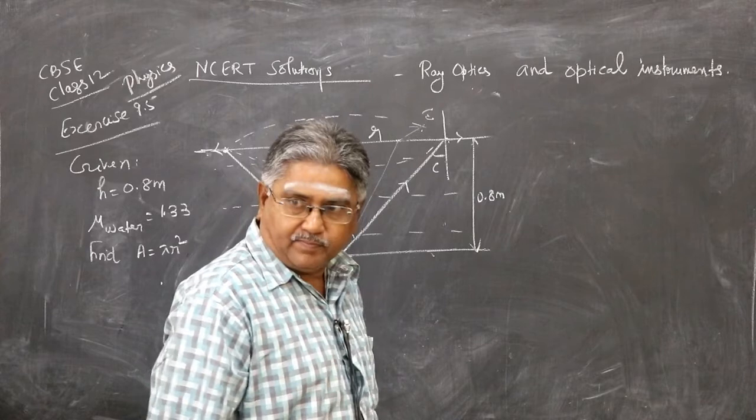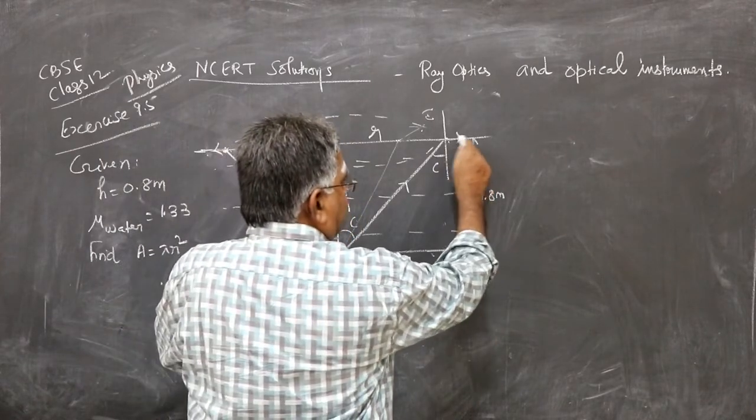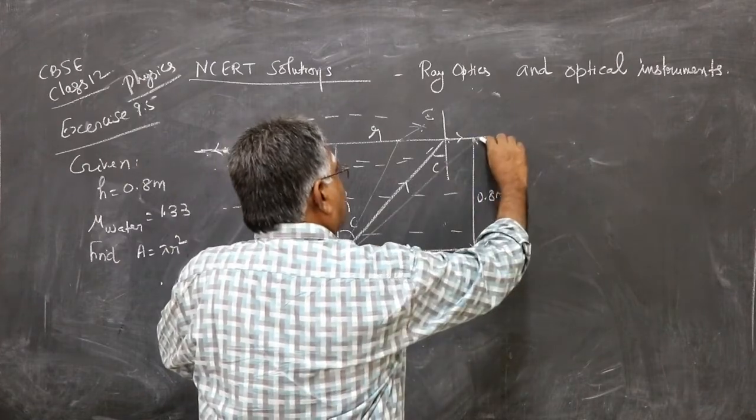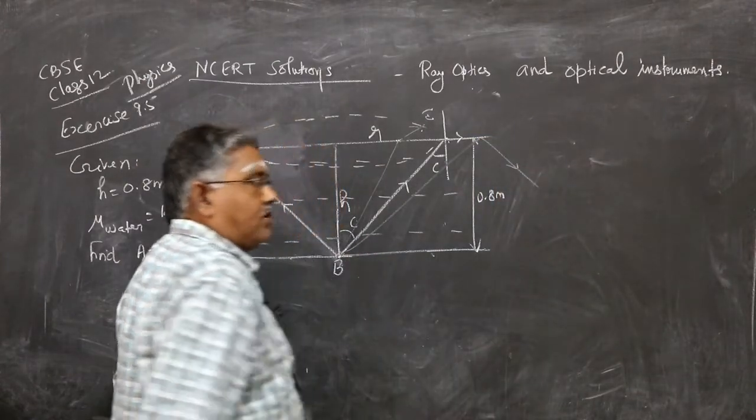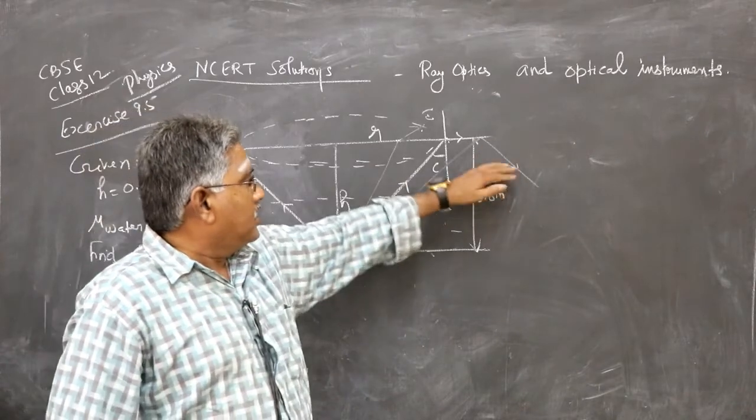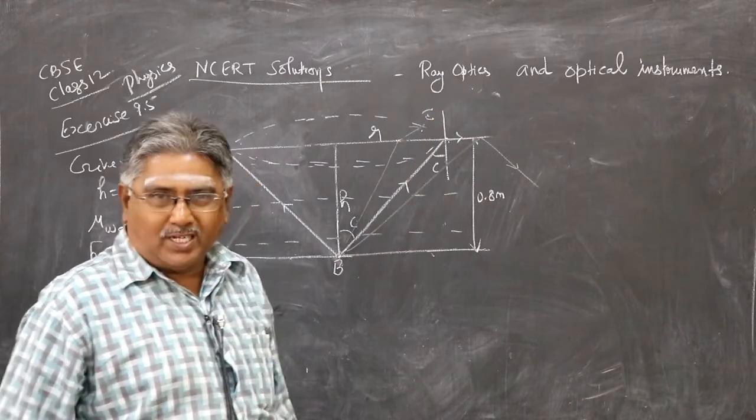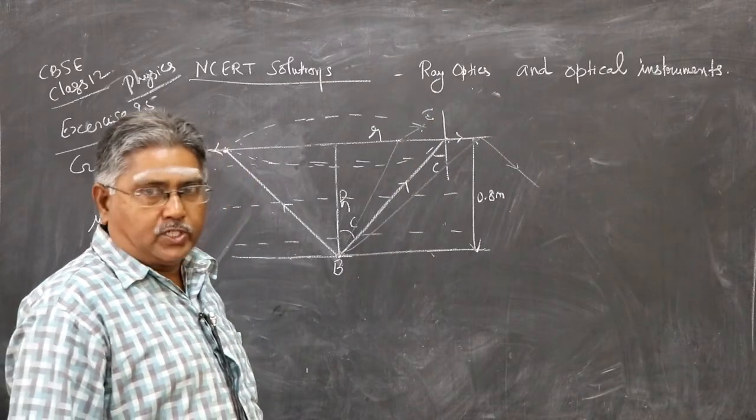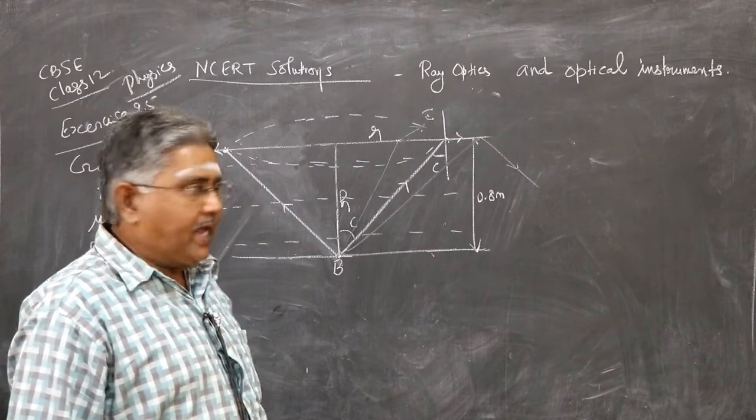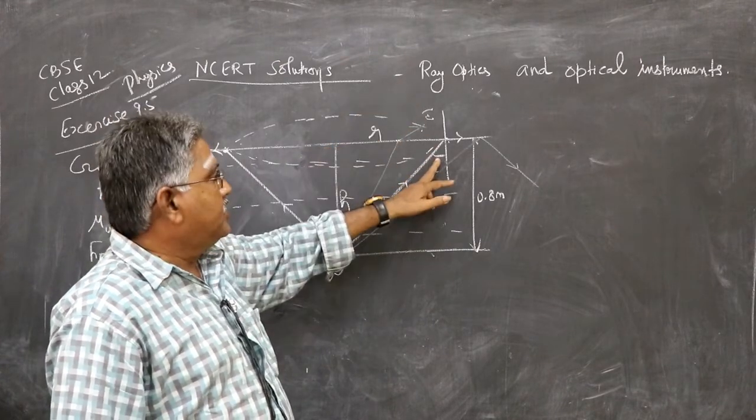Consider a ray here. This ray doesn't go to the outer surface of the tank. It will graze the surface. Any angle more than that, it will undergo total internal reflection. There's no possibility of this light going out and reaching the observer.